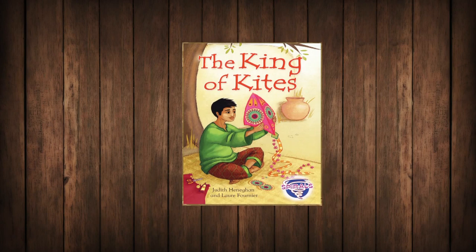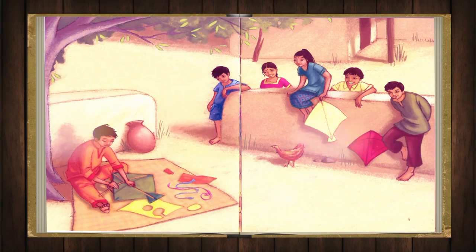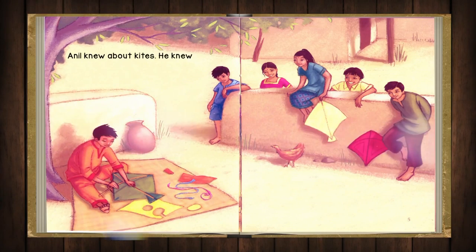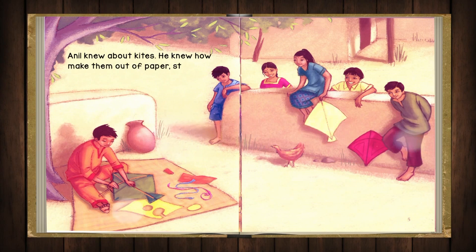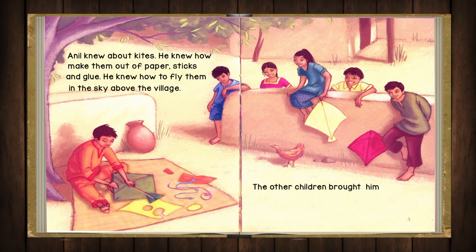The King of Kites by Judith Hennigan and Laura Fournier. Anil knew about kites. He knew how to make them out of paper, sticks and glue. He knew how to fly them in the sky above the village. The other children brought him their broken kites to mend. Anil was the king of kites.